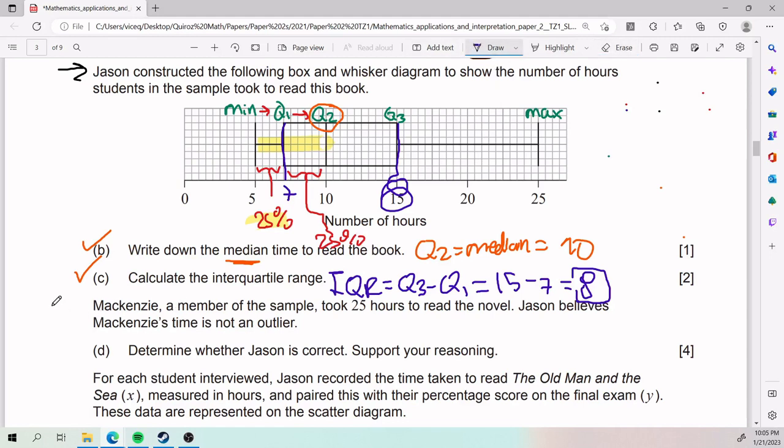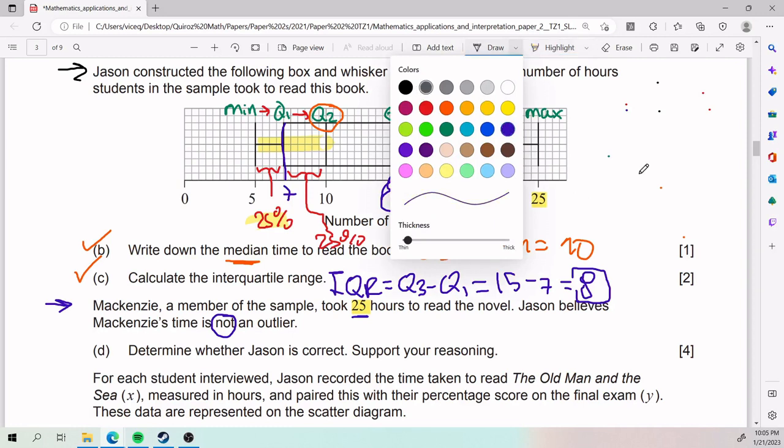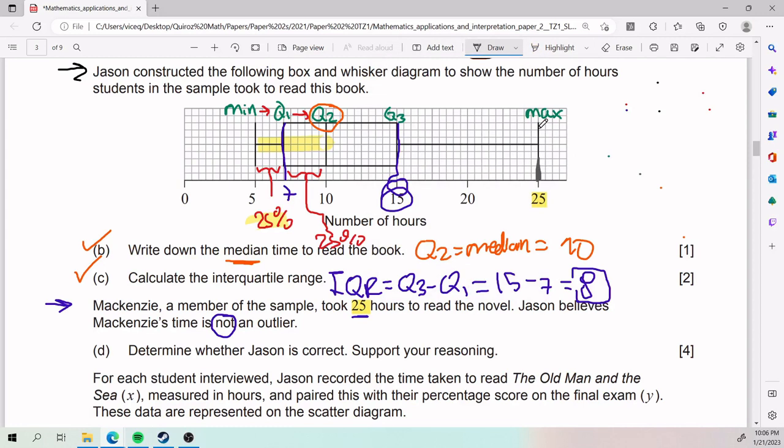Then they tell us that McKenzie, a member of the sample, took 25 hours to read the novel. And Jason believes that McKenzie's time is not an outlier. And we need to see whether Jason is correct or not in respects to this. And so here, a lot of people would say, where is 25? 25 is over here. 25 is very much to the right side. It's even the maximum. And some people would say, oh, it's so far away from my data. It's probably an outlier. And that's like their justification. The thing is, we can't solve this visually, unfortunately.